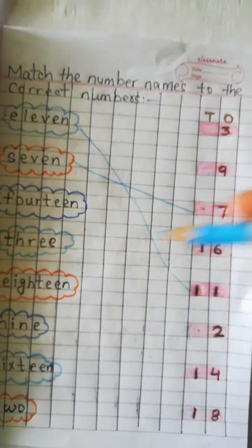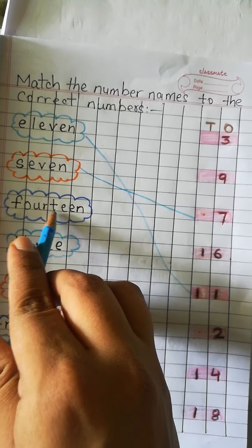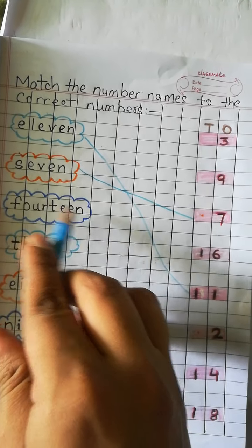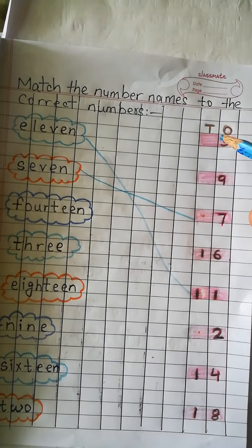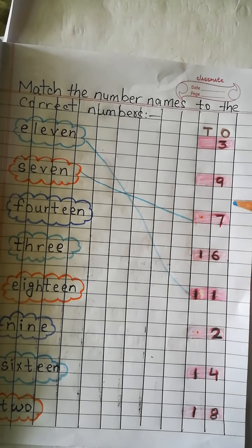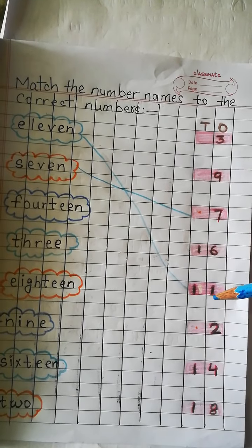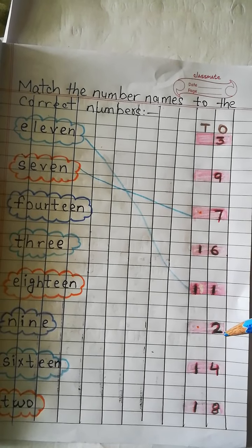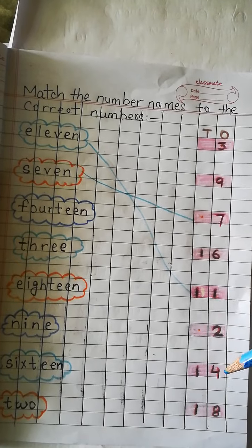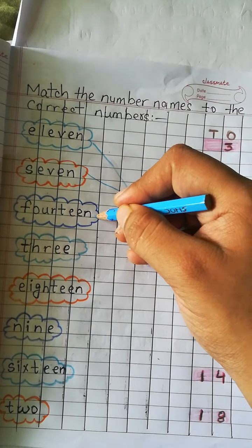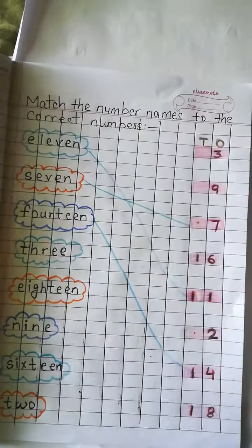Now, FOURTEEN — F-O-U-R-T-E-E-N — 14. Let's find number 14. Number 3, number 9, number 7, number 16, number 11, number 2, and number 14. Let's match 14.